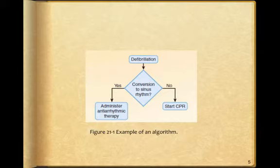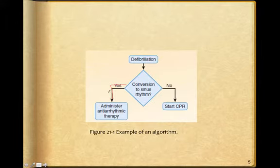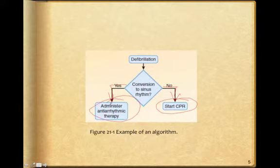Here is an example of an algorithm — one used to defibrillate someone. Did the patient convert to a sinus rhythm? If the answer is yes, administer anti-arrhythmic therapy. If the answer is no, start CPR and go back at it again. This gives us the ability to take treatments and apply if-then statements, providing a stair-step approach to treatment.